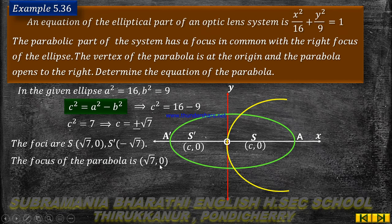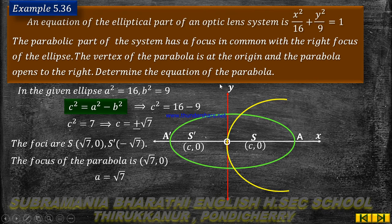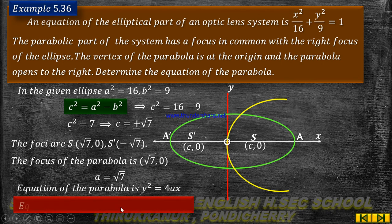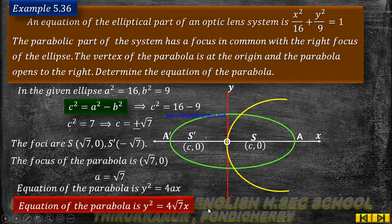The focus of the parabola is (root 7, 0). The distance from vertex to focus, A, equals root 7. Since the parabola is open to the right, the equation of the parabola is y squared equal to 4AX. Therefore the required equation of the parabola is y squared equal to 4 into root 7 into x.